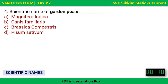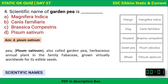Next: What is the scientific name of garden pea? Options are Mangifera indica, Canis familiaris, Brassica campestris, or Pisum sativum. The correct answer is Pisum sativum — known as garden pea. Mangifera indica is mango, Canis familiaris is dog, Brassica campestris is mustard, and sweet pea is Pisum odoratus. Wheat is Triticum aestivum.